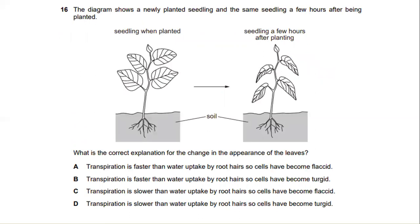The diagram shows a newly planted seedling and the same seedling a few hours after being planted. If you can see from the left hand side, seedling when planted. And from the right hand side, seedling a few hours after planting. What is the correct explanation for the change in the appearance of the leaf? If you can see the leaf on the left hand side is more healthy. The reason being is transpiration is faster than water uptake by root hair, so cells have become flaccid. The answer for this is A.